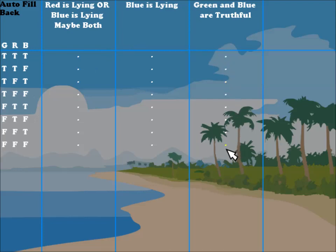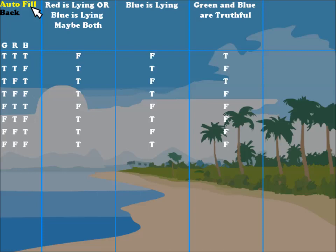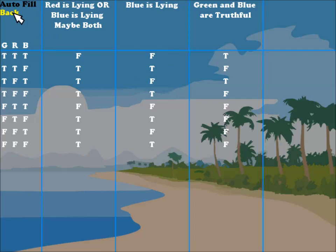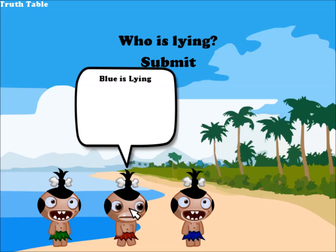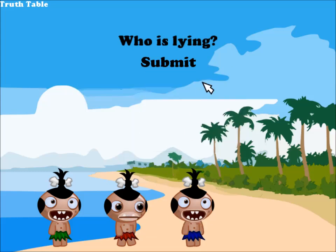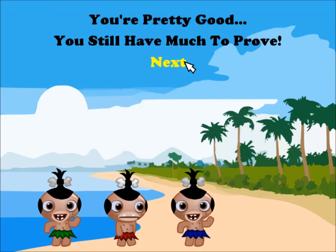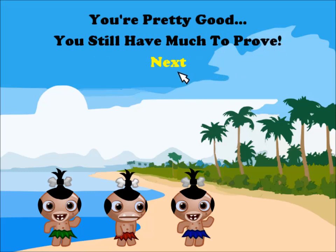With three islanders, filling the table manually would take a long time, but autofill handles it. We're looking for the consistent row, and it's true-false-true: true, false, true. That means the middle one — Red — is lying, because Red's statement is false while Green's and Blue's are consistent with their truth values. Let's go back, accuse Red of lying, and hit Submit. That's the right answer — the truth tellers are dancing again. The program says, you're pretty good, you still have much to prove.